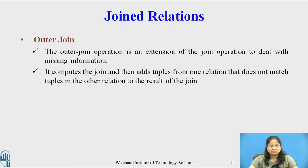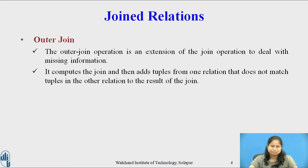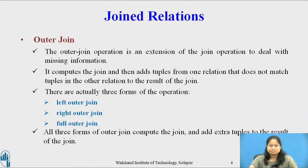Consider outer join. The outer join operation is an extension of the join operation to deal with missing information. It computes the join and then adds the tuples from one relation that does not match the tuple in the other relation to the result. The outer join works similarly to the natural join but preserves those tuples that would be lost in a join by creating tuples in the result containing null values. There are three forms: left outer join, right outer join, and full outer join. All three forms compute the join and add extra tuples to the result.